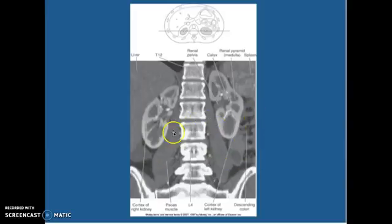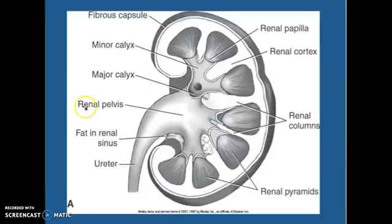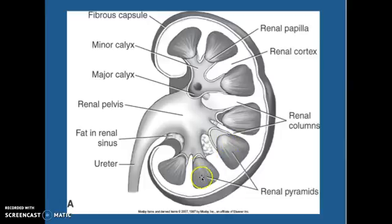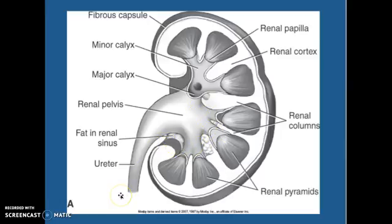Looking at the kidney blown up again — starting around the top — the fibrous capsule is around the outside. You have your renal papilla with your renal cortex and columns in between. These are your renal pyramids, each of these gray areas. When we do arterial phase, you'll see the cortex lighting up nicely, and the pyramids will still be dark because they're not filtering yet. Here's your renal pelvis with some fat within the sinuses, and then your ureter coming down.